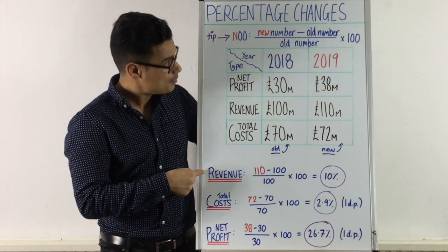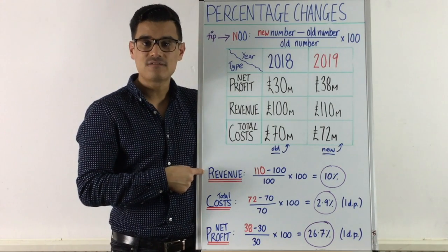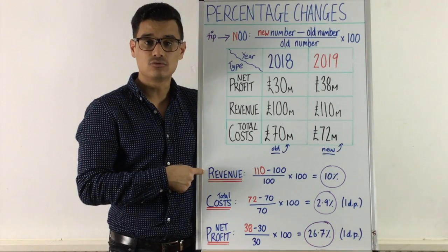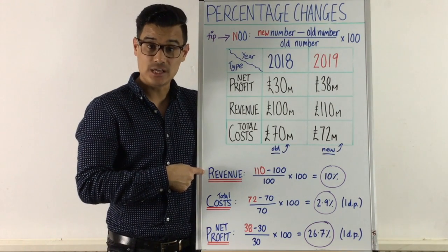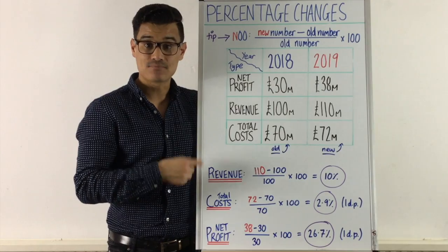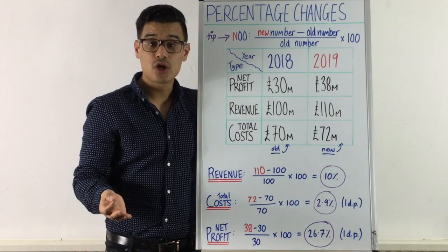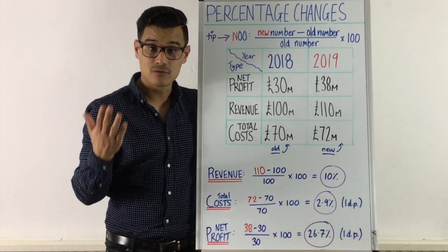That's 10% — don't forget the percent sign. So we can see that between 2018 and 2019, revenue increased by 10%. That's a good thing — revenue is increasing. So let's now do total costs.